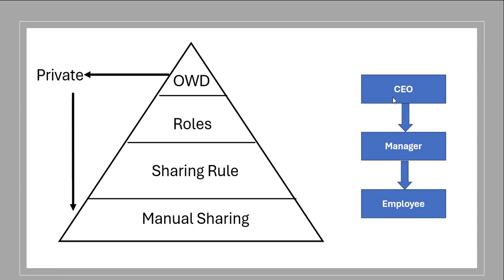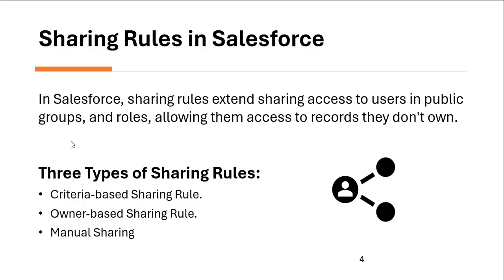When the OWD is private, the CEO can see managers' and employees' records, and the manager can see employees' records, while employees can only see records they own. However, in some situations an employee wants to see managers' and CEOs' records. Using role hierarchy this is not possible, because as per role hierarchy only higher-position users can see lower-position users' records. So when an employee wants to see managers' and CEOs' records, sharing rules and manual sharing come into the picture.